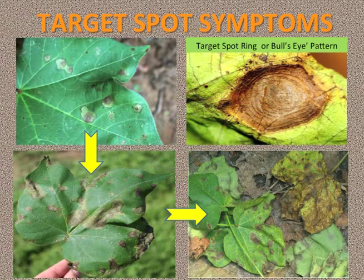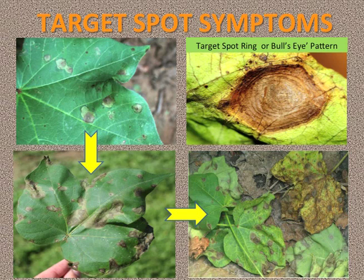Target spot symptoms first appear on mature leaves in the lower and mid-canopy at or shortly after the first bloom. At first, the one-eighth to quarter-inch spots are tan to light brown in color and are surrounded by a light green, irregular halo or zone around the spot margin.